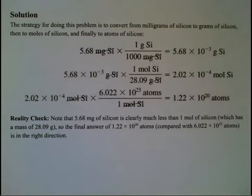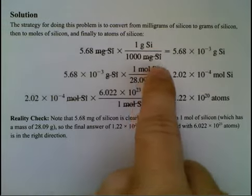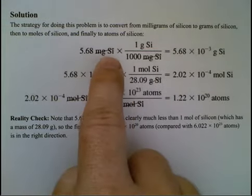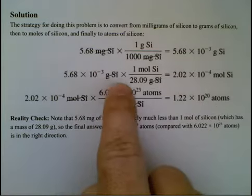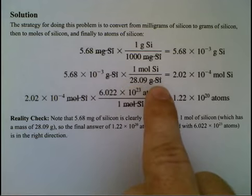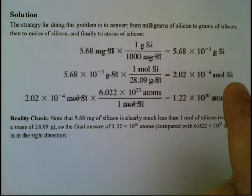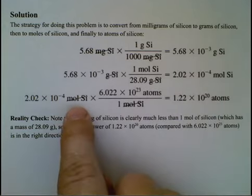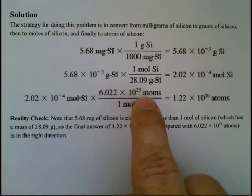So we're going to have to do three different conversions, and they look as follows. Milligrams of silicon on the denominator, so that'll cancel out milligrams of silicon here. I generate grams of silicon. I take this number, grams of silicon, convert away from grams of silicon into moles of silicon to generate this value. Now I'm in moles of silicon. I'm going to cancel out moles of silicon to yield atoms of silicon,